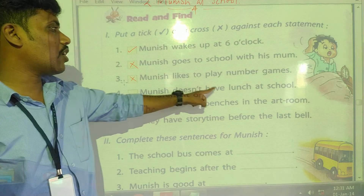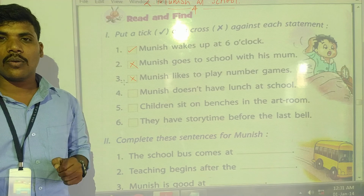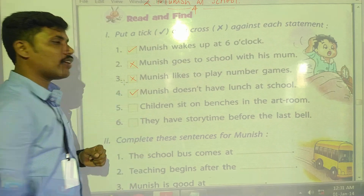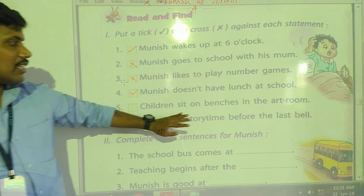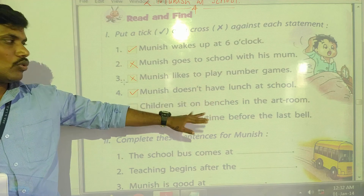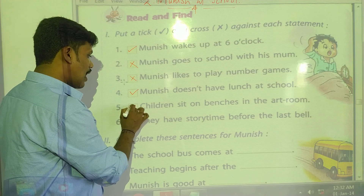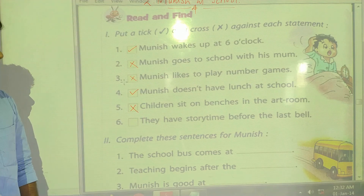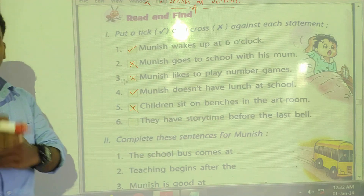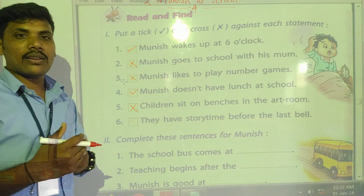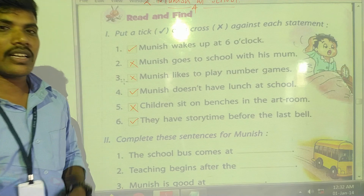Fourth one: Munish does not have lunch at school. Are you taking lunch at your school? Yes. In the same way, Munish also has lunch at his school. Fifth one: Children sit on benches in the art room. Is it correct? No — they are sitting on carpets in the art room. Last one: They have story time before going home — the teacher is telling a story. Is it right? Yes, that is correct.